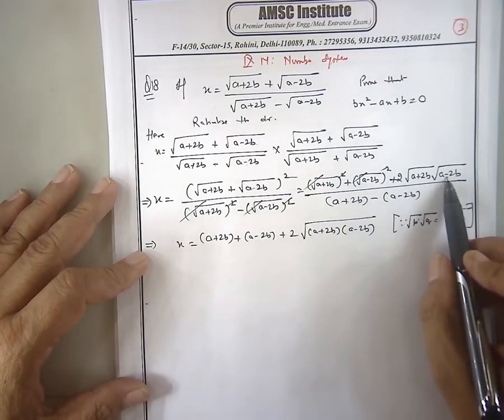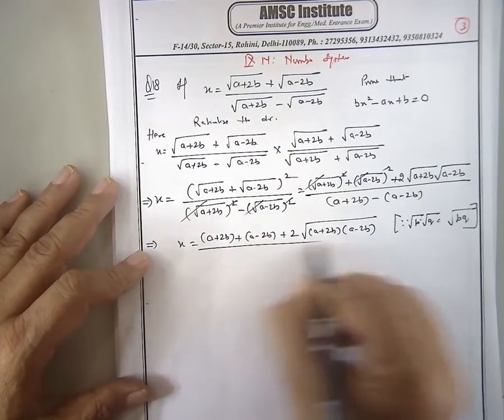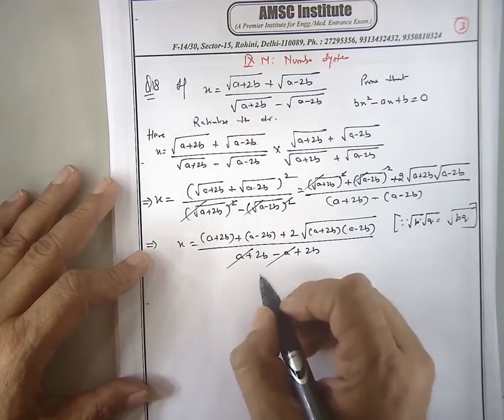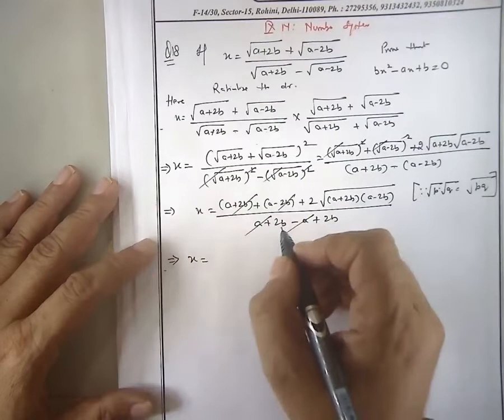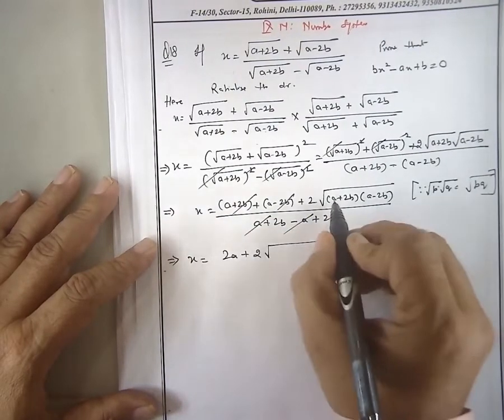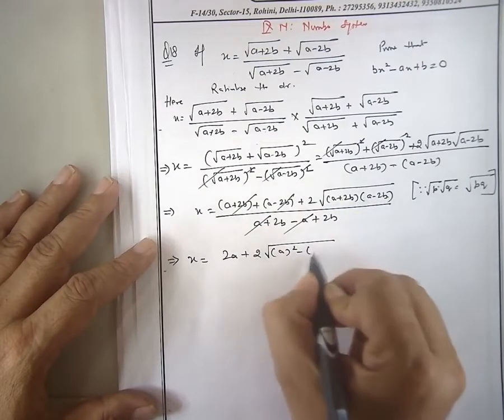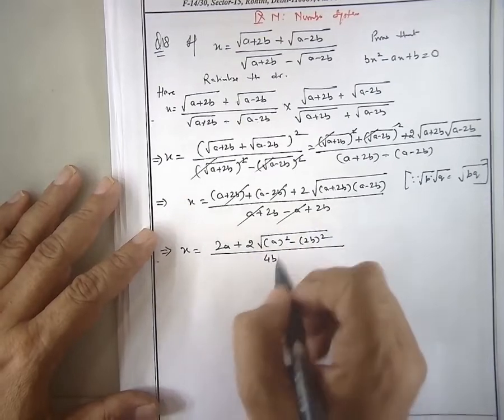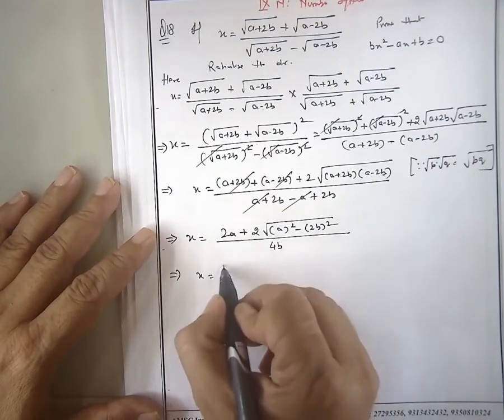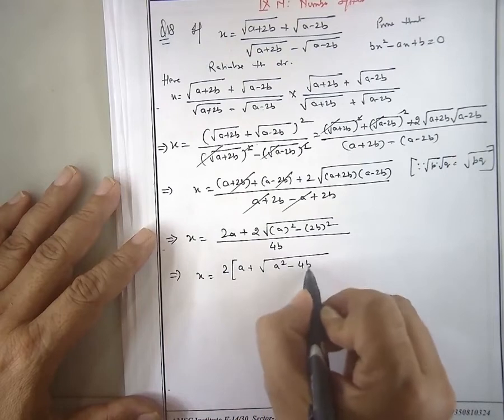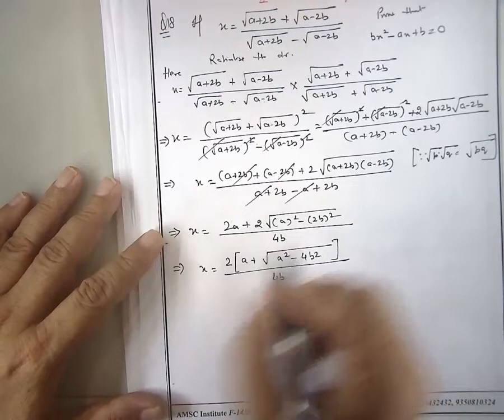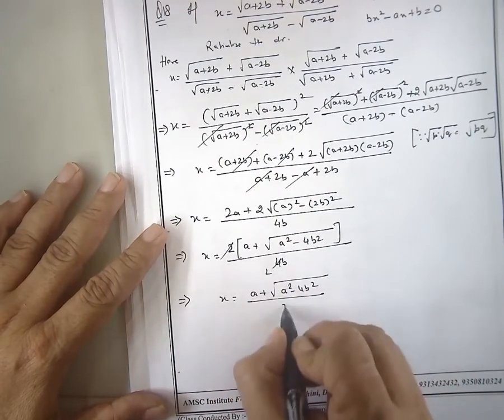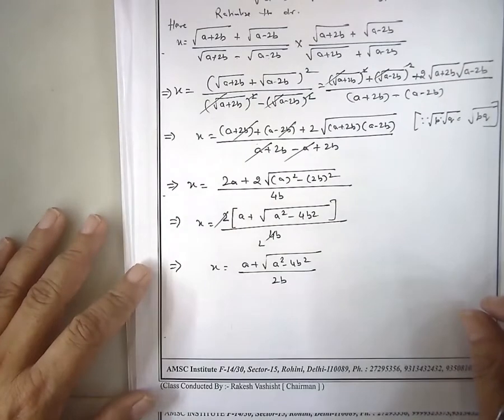Divided by a plus 2b minus, bracket closing. This and this, plus 2b minus cancels. In the numerator, take 2 common. This and this cancel. Actually equals a plus a squared minus 4b squared, divided by 2b. You can cancel.